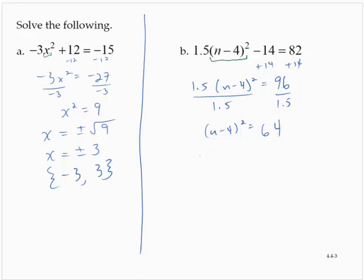Using the square root property, n minus 4 is the positive or negative square root of 64. Now the square root of 64 is 8, so I have positive or negative 8. Breaking it up into two equations.